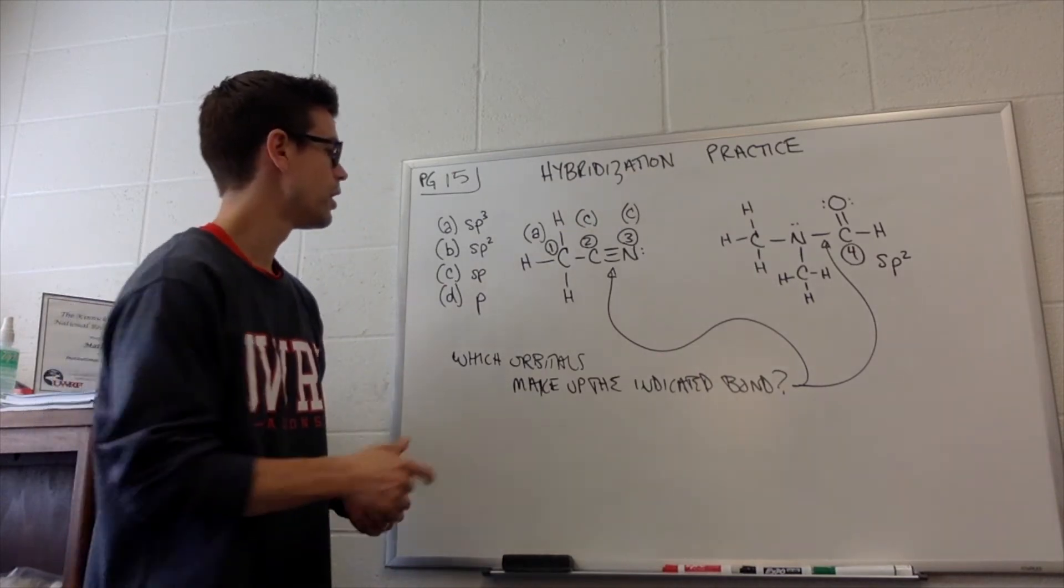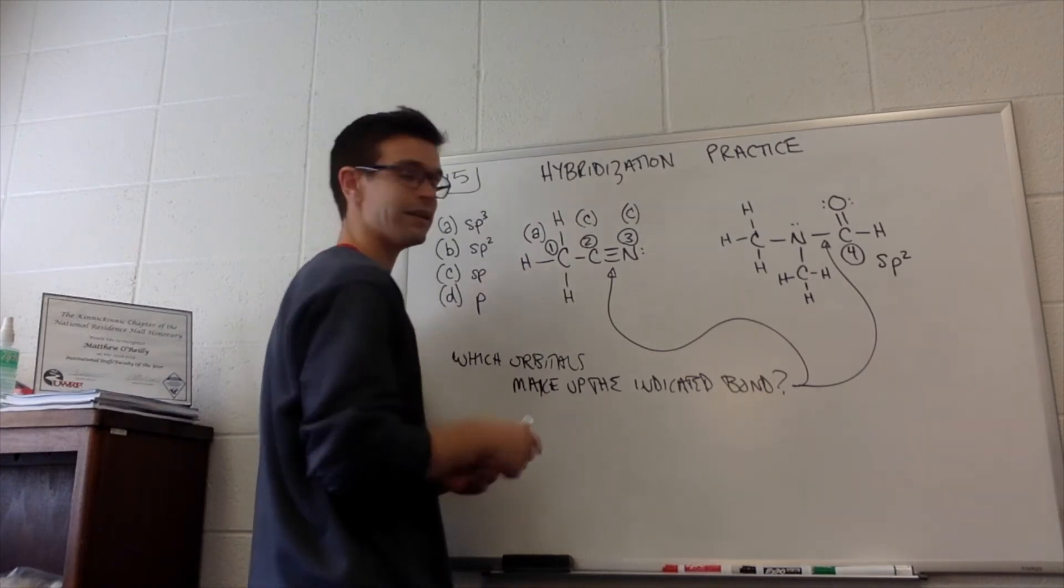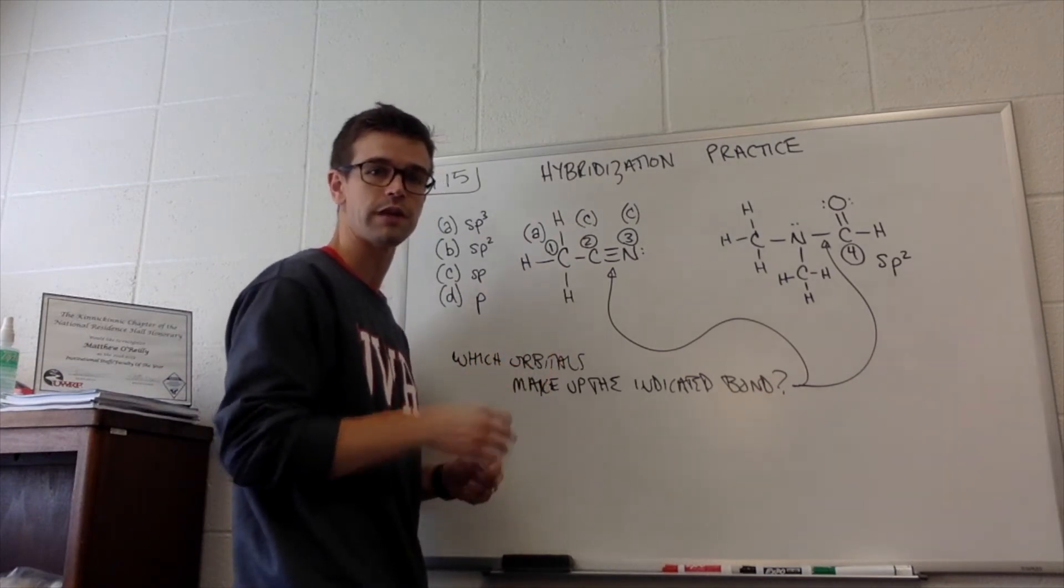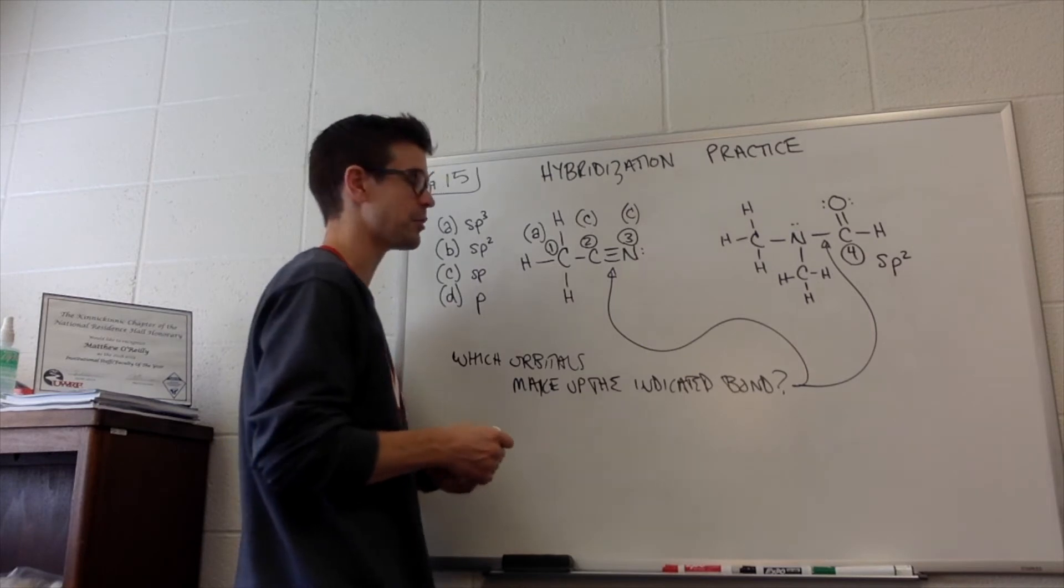All right, we are good to go. This bond here is a triple bond, right? So triple bonds, you have to have a sigma bond. The sigma bond is from the sigma orbitals. They're from the hybrid orbitals.